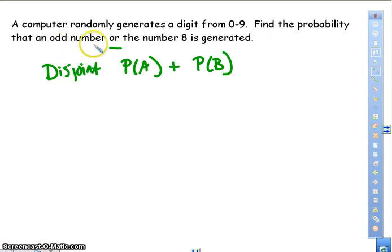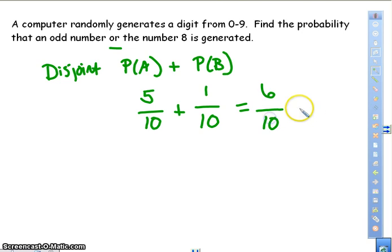So the probability that I'm going to land on an odd number for my digits, I have one, three, five, seven, and nine. So that's five out of ten of my digits would be odd, plus the number eight. One out of ten would be eight. There's only one eight out of ten digits. I'm going to add them together. Five plus one is six. The ten remains the same, and then I'm going to simplify. And I get three-fifths as my solution.